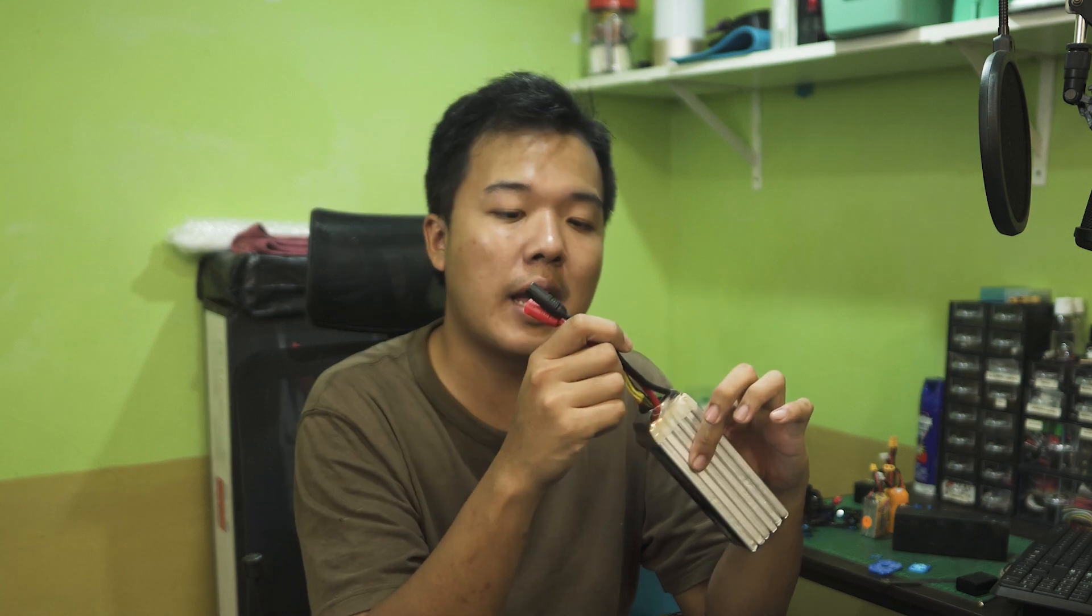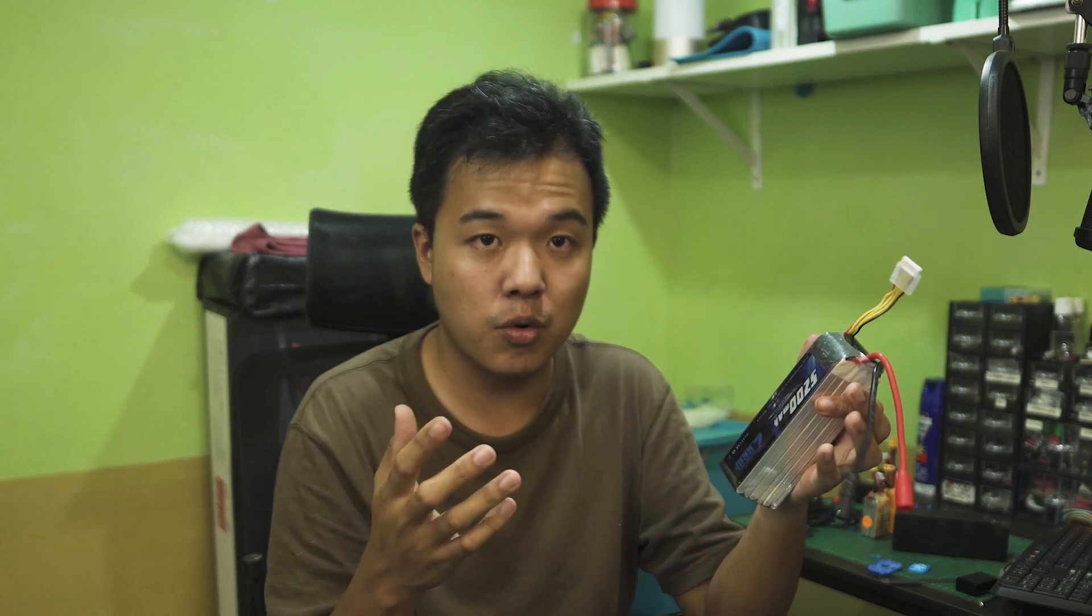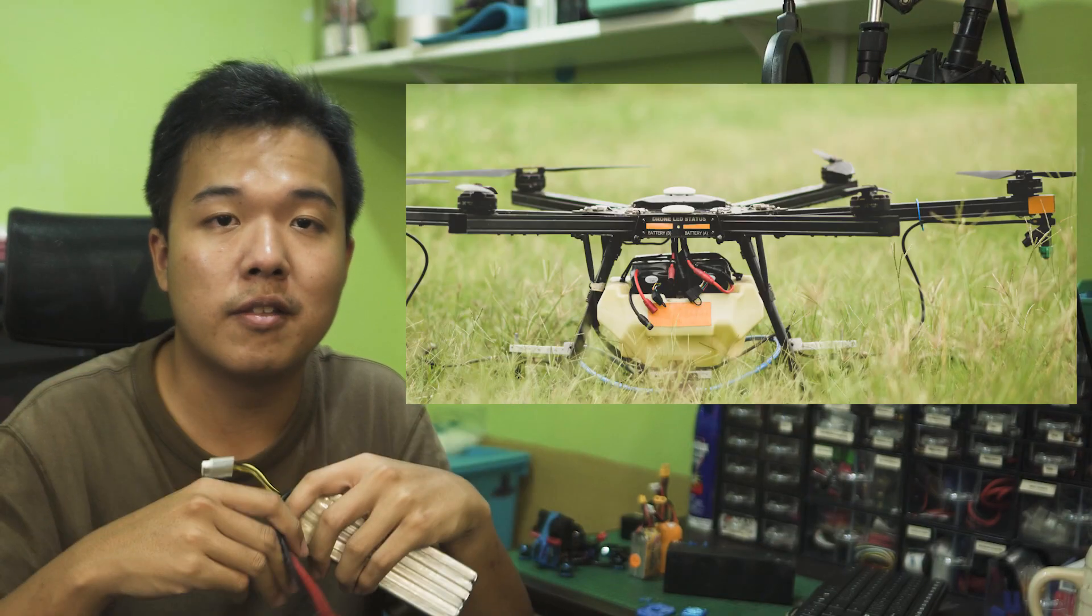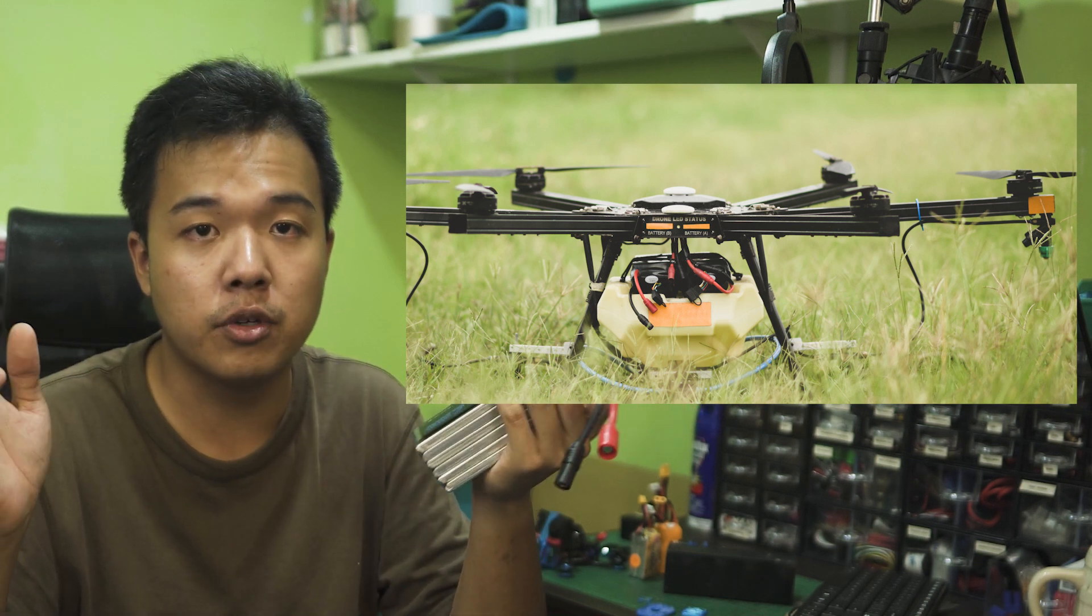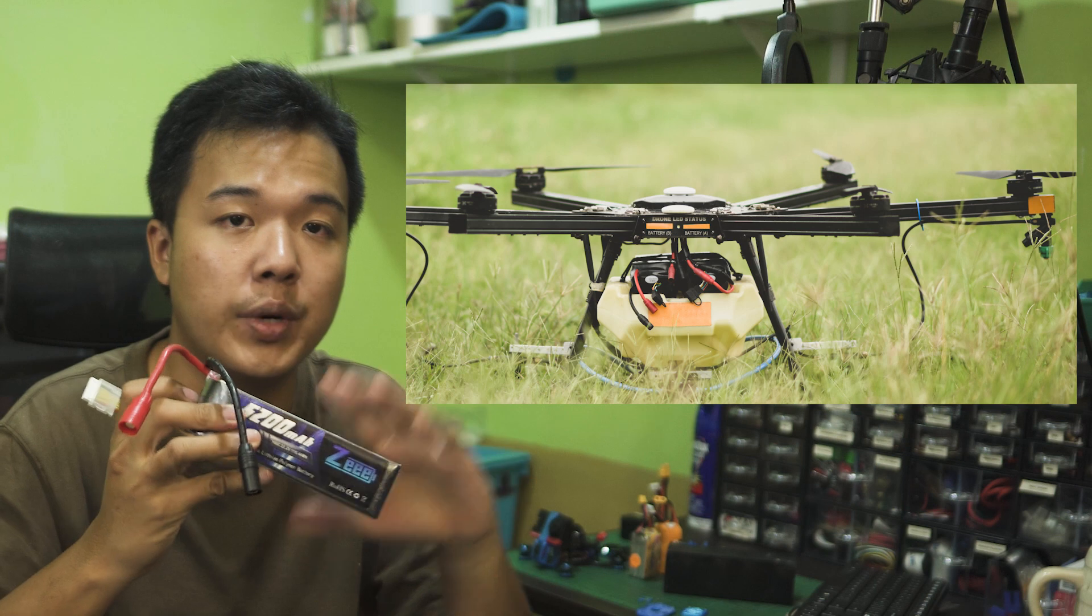So the AS150 connector's application is normally on larger quads. To the extent that I've heard that it's been used on X-Class, such as 10-inch octocopters, as well as 12S rigs.